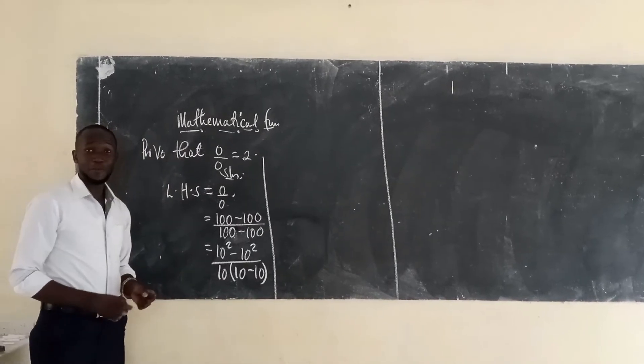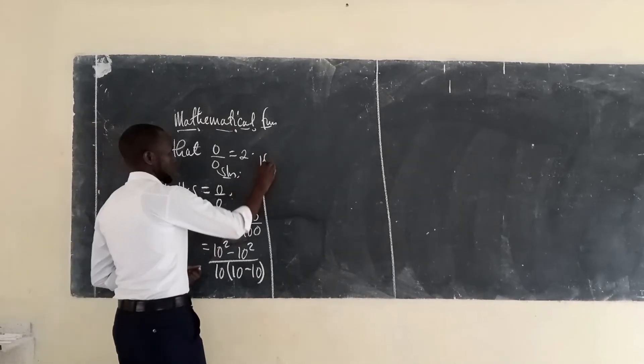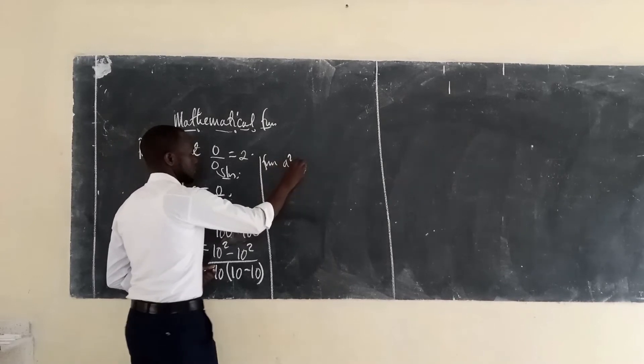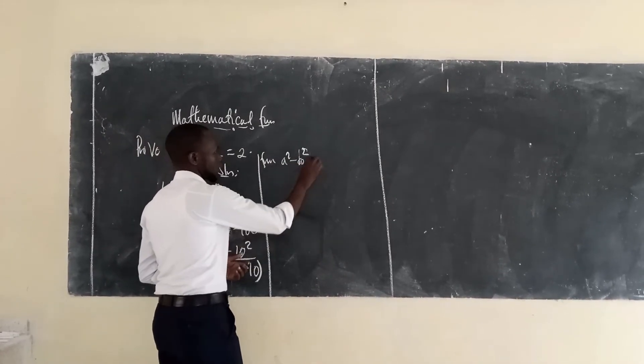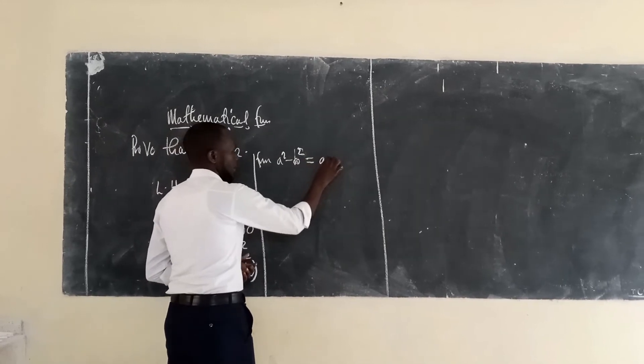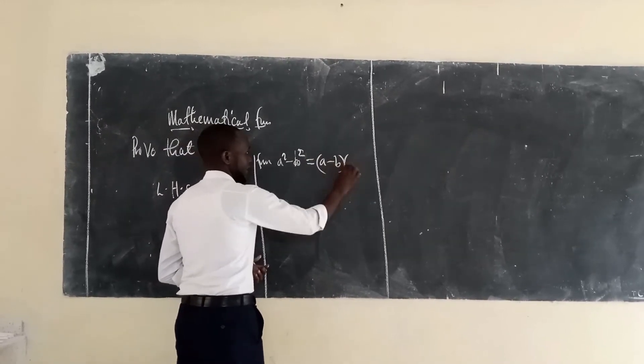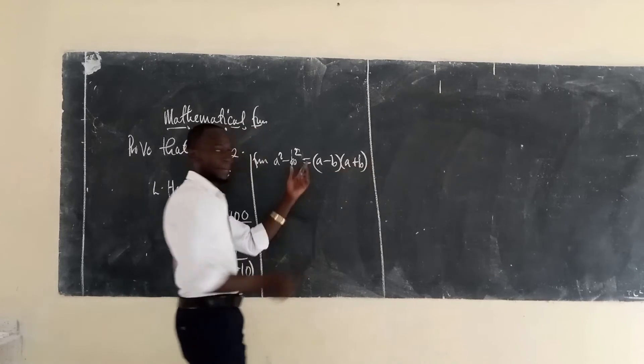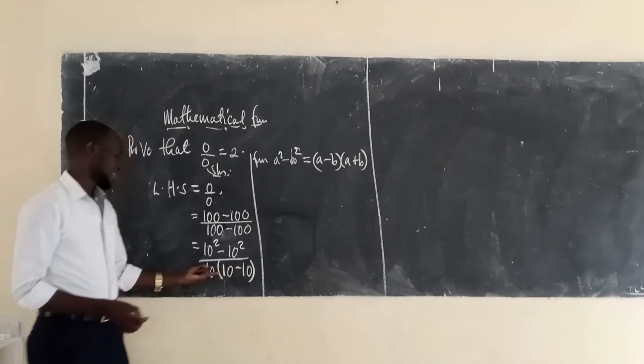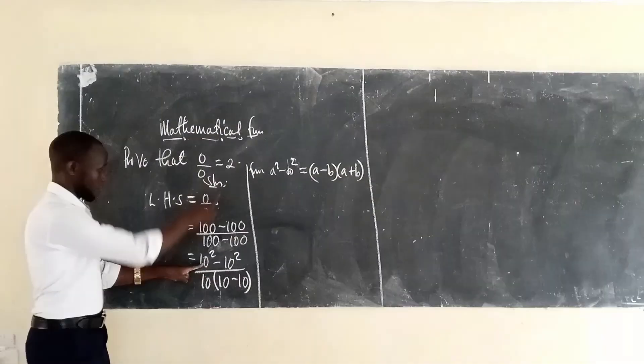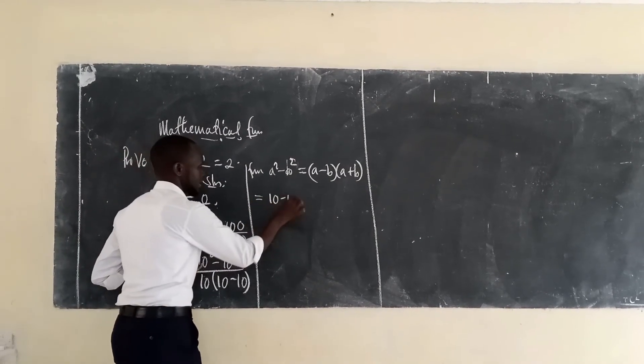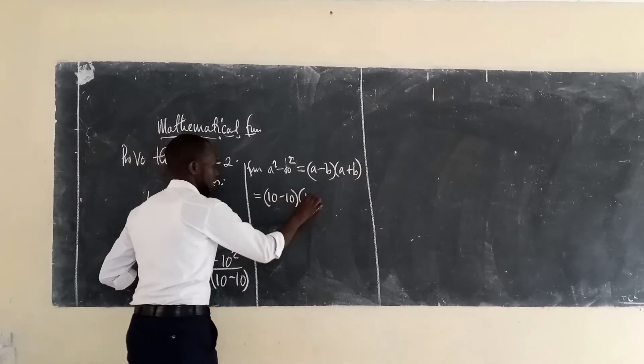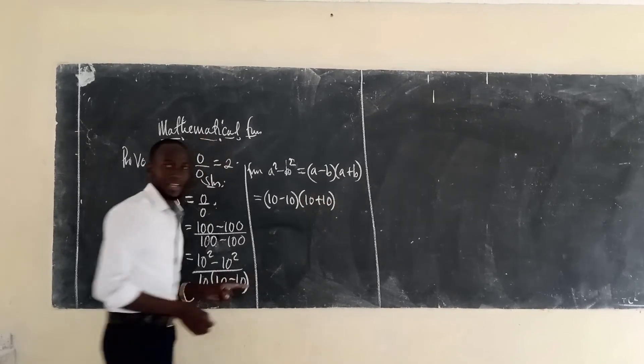This one. From a squared minus b squared is equal to a minus b into a plus b. Do you remember this? If this is true, now come back here. Use that very information here. So you will say, of ten minus ten, into ten, plus ten, plus ten. Now look at this.